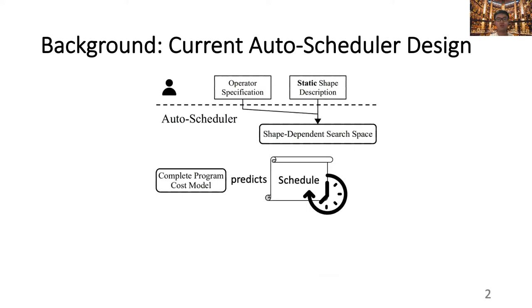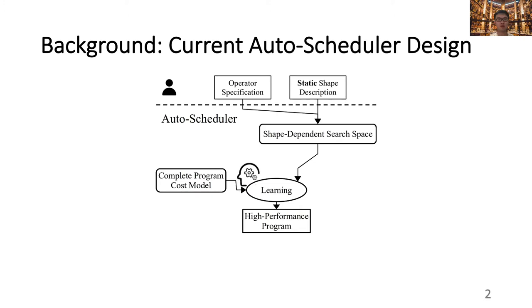To efficiently search through the search space, the auto-scheduler introduces a complete program cost model that can accurately predict the performance of each schedule. During the learning process, the auto-scheduler uses the cost model that is constantly updated using real hardware measurements to guide the search in the shape-dependent search space, and finally deliver a high-performance program.